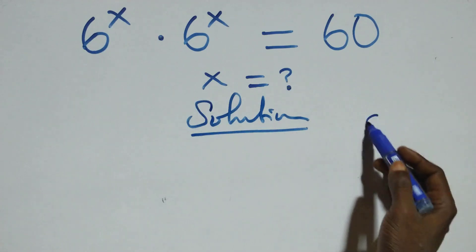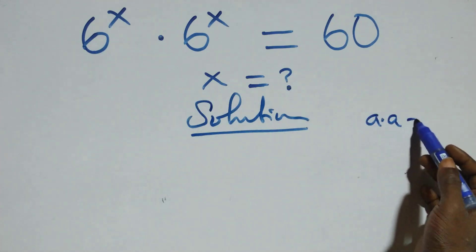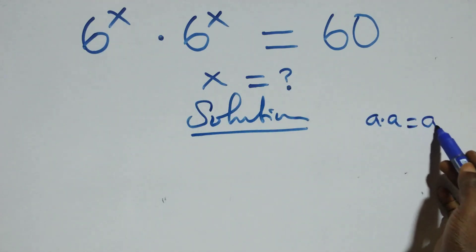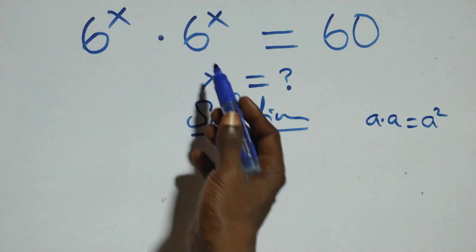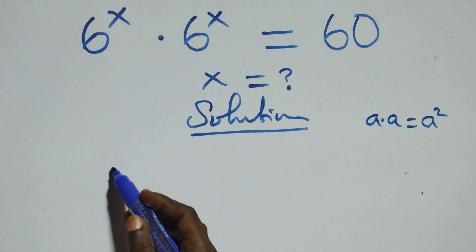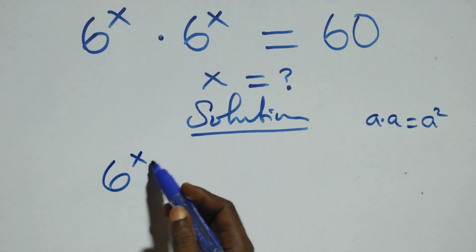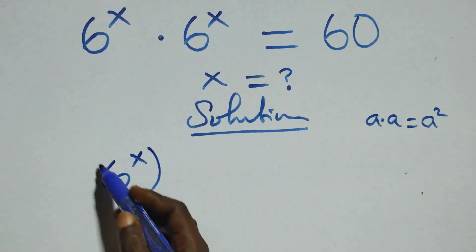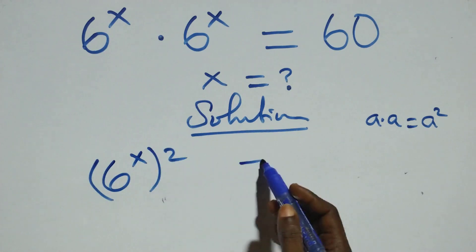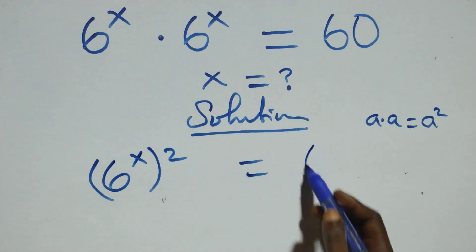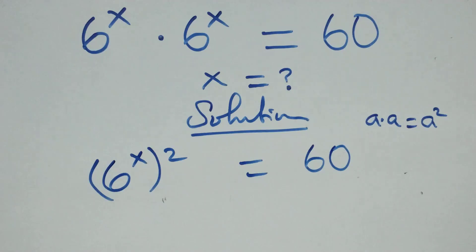This follows when we have a times a — this can be written as a squared. At this same thing multiplying, we have 6 raised to the power x, all squared, equals to 60 on this side.